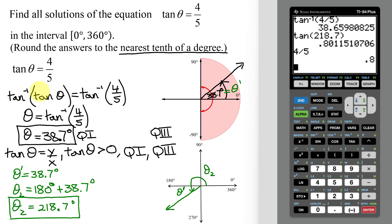So this problem here had two solutions in the interval 0 to 360 degrees, and they are 38.7 degrees in quadrant 1 and 218.7 degrees in quadrant 3.